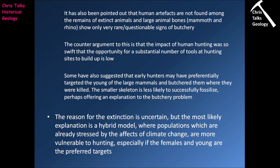The reason for the Pleistocene extinction is uncertain, but the most likely explanation is a hybrid model where populations already stressed from the effects of climate change were made more vulnerable to hunting, especially if females and young were preferentially targeted. Removing the young preferentially would eventually lead to a population collapse. Thank you very much for watching this presentation.